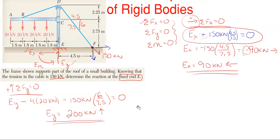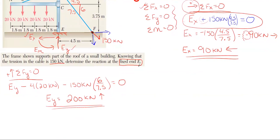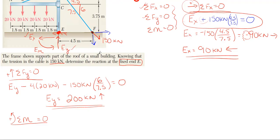Next is the moment equation. When using a fixed cantilever, it's best to sum moments about the reaction point E. This eliminates E sub x and E sub y from the equation entirely, which also protects you from carrying forward any errors in those two reactions. So we'll sum moments about E.